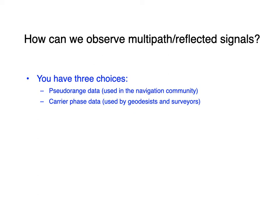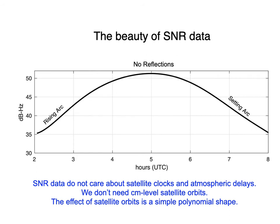Carrier phase data is what was used earlier to study the multipath problem, and it's used by all geodesists, surveyors, and geophysicists. But it's complicated for multipath modeling because there's no single observable that gives you just multipath — you're always combining multiple satellites or dealing with other error sources simultaneously. The third kind of observation is SNR data, and it's used by essentially no one because it doesn't tell you position — signal strength is just something equipment computes.